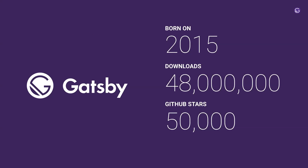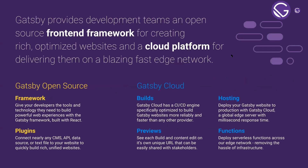A quick intro to Gatsby: Gatsby was born six years ago. 2015 was our first commit. We have over 50 million downloads and over 50,000 GitHub stars, so it's a widely popular open source project. The open source project contains frameworks and plugins. It gives developers the tools and technology they need to build fast sites built on React. Then Cloud is a product that has builds, hosting, previews, and functions — it's going to allow you to build, deploy, and preview your site faster than ever.